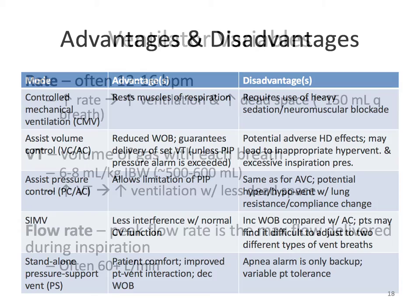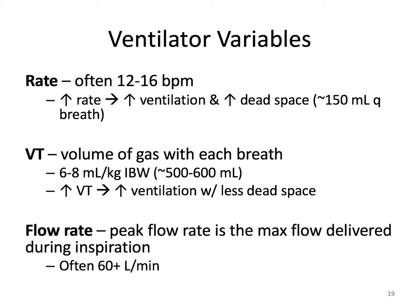The respiratory rate is often set at 12 to 16 breaths per minute. Note, however, that an increase in rate increases ventilation but also increases dead space — dead space being the air not utilized through perfusion, usually around 150 milliliters with each breath. Tidal volume is the volume of gas with each breath, usually set at 6 to 8 milliliters per kilogram of ideal body weight, usually ranging between 500 and 600 milliliters. An increase in tidal volume will increase ventilation with less dead space.